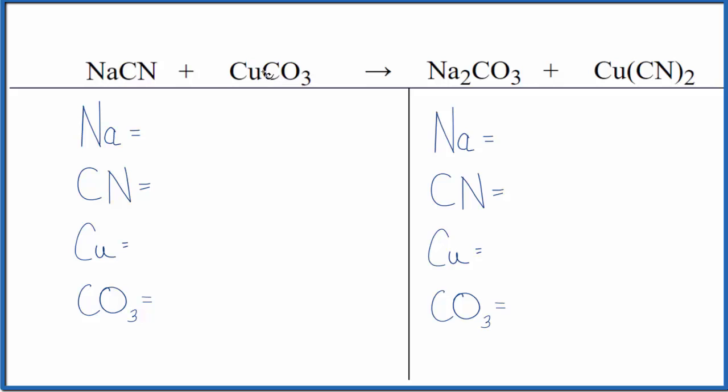So let's start with the type of reaction. We can see the sodium, it starts with the cyanide here, but over here it ends with the carbonate. The copper, it starts with the carbonate, but now the copper here is with the cyanide. So the sodium and the copper, they switched places. That makes this a double displacement reaction. That's the type of reaction.